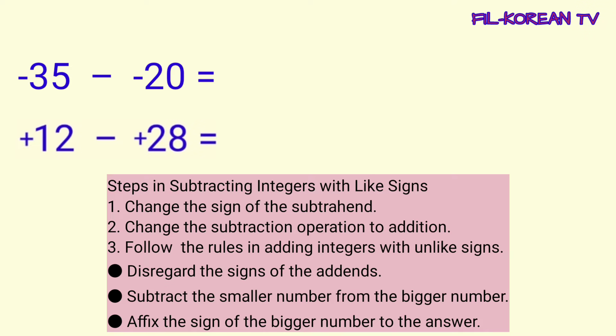To add integers with unlike signs, disregard the signs of the addends, subtract the smaller number from the bigger number,